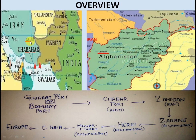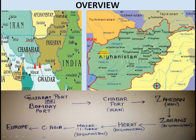India is developing railways and roads in this area with a 500 million dollar investment. The road route goes from Zaranj to Herat to Mazar-i-Sharif and then connects to Tyne in Afghanistan. From there it is connected with Russia, Central Asia, and Europe.